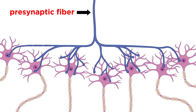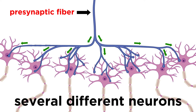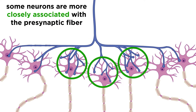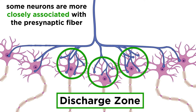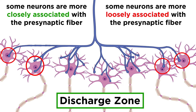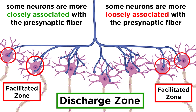Here we can see a presynaptic fiber with many branching terminal ends, leading to a number of different neurons. Some of them are more closely associated with the presynaptic fiber, as there are many more points of contact. These neurons are in the discharge zone. Moving outwards, we see other neurons with fewer points of contact, and these sit within a facilitated zone.